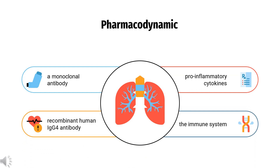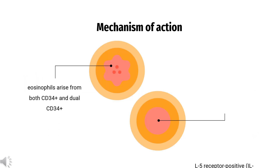Pharmacodynamics: Dupilumab is a recombinant human IgG4 antibody to the IL-4 receptor that works by inhibiting the activation of certain pro-inflammatory cytokines implicated in the pathophysiology of several allergic and atopic conditions, including asthma, chronic rhinosinusitis with nasal polyps, and food and environmental allergies. Type 2 inflammatory processes in various allergic and atopic conditions, such as asthma and atopic diseases, involve the type 2 helper T cell (TH2) immunity.